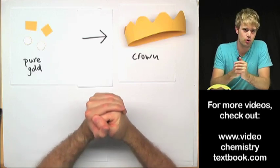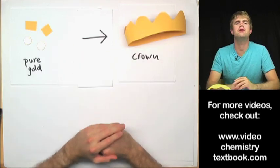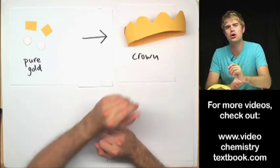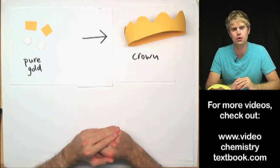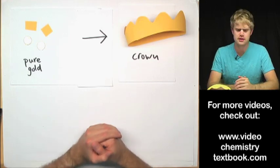So Archimedes is summoned to the royal court and the king says to him, I have this crown. I'm not sure if it's made of pure gold. The goldsmith might have cheated me. How can we determine whether this is pure gold? So Archimedes, who is a very sharp guy, thinks about this for a while.